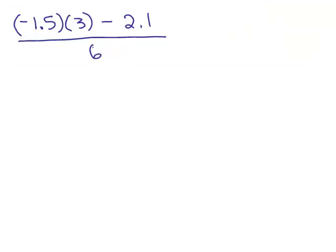All right, so let's simplify this expression. So we have a fraction bar, so we have to simplify the numerator before we divide by 6. So in the numerator, we have a multiplication and a subtraction. We do the multiplication first.